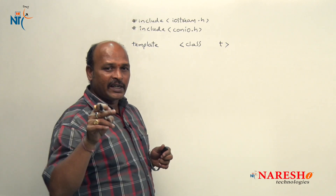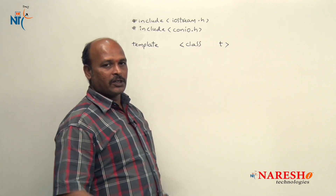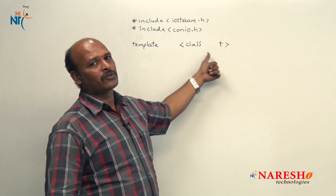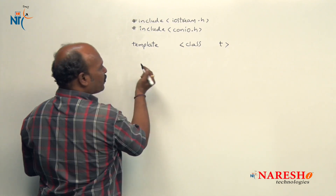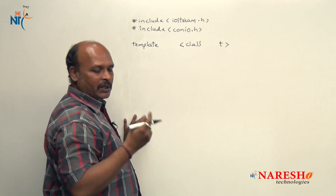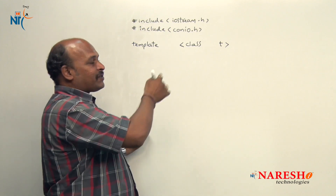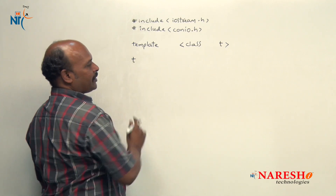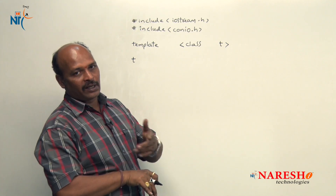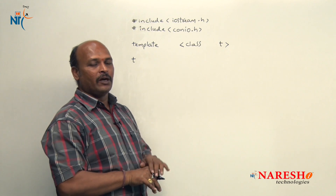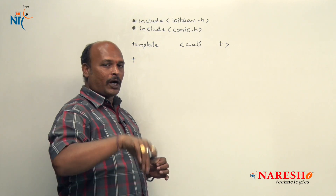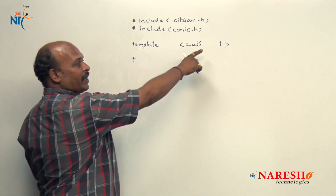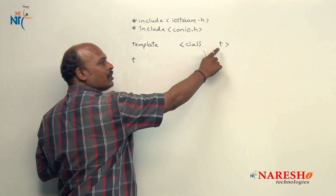For example, if we are sending integer values, T becomes integer; if float, T becomes float; if double, T becomes double. That means one type handles several data types — that is why it is called generic. The return value of the function also depends on what the user sends, so the return type is also T, because it depends on the class type.